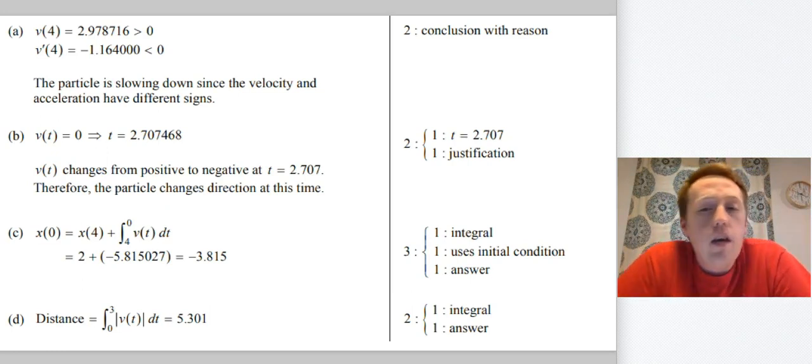Part B: getting t = 2.707 and then the explanation. Now again, this is another one of those things, it doesn't say you have to say v(t) = 0, but I really would because any help justifying that you know what you're talking about is good to put on your paper. And then our explanation is because velocity changed sign.